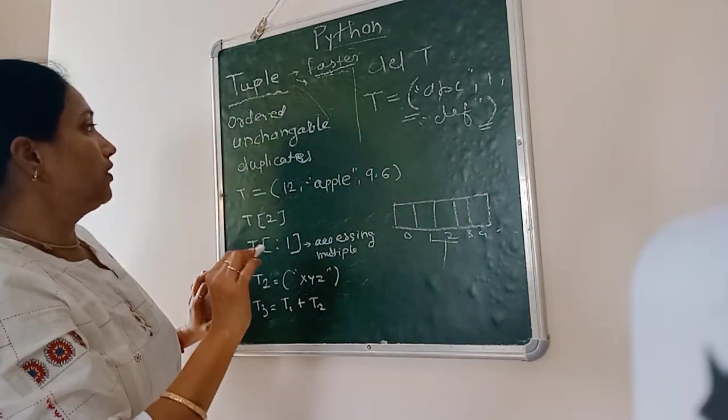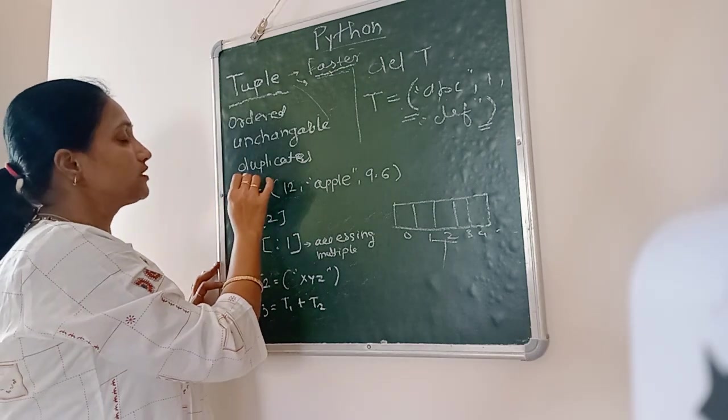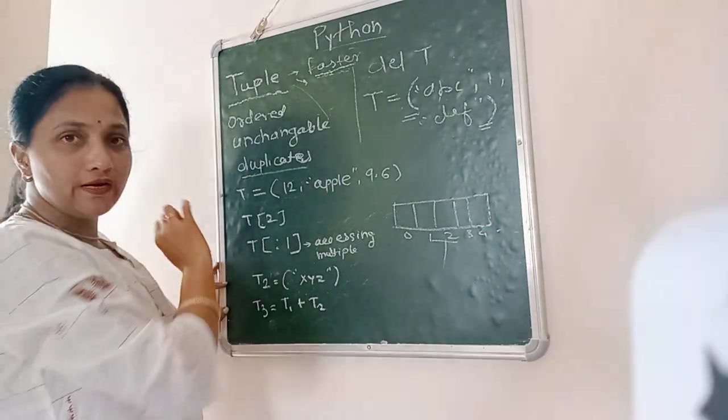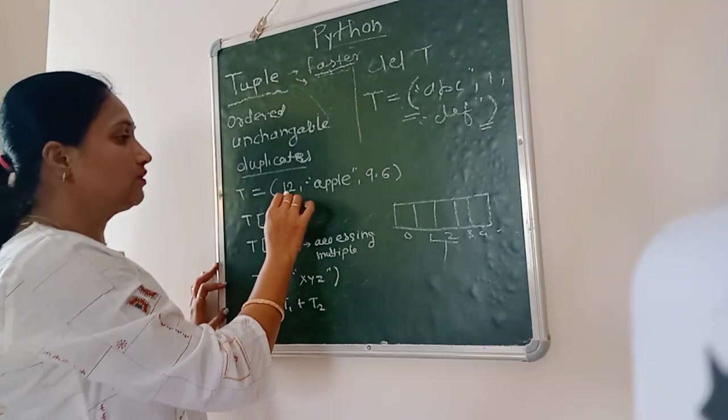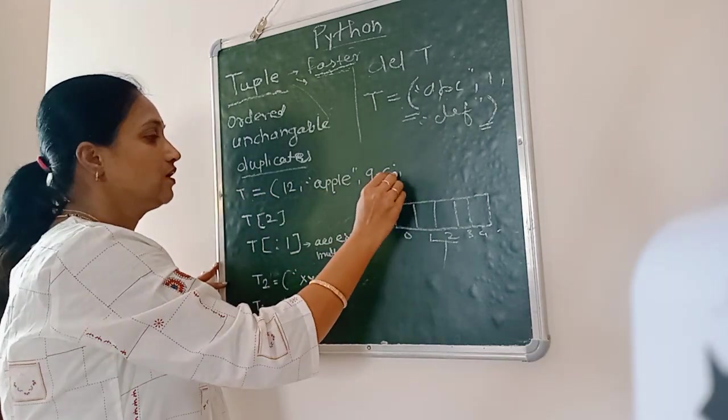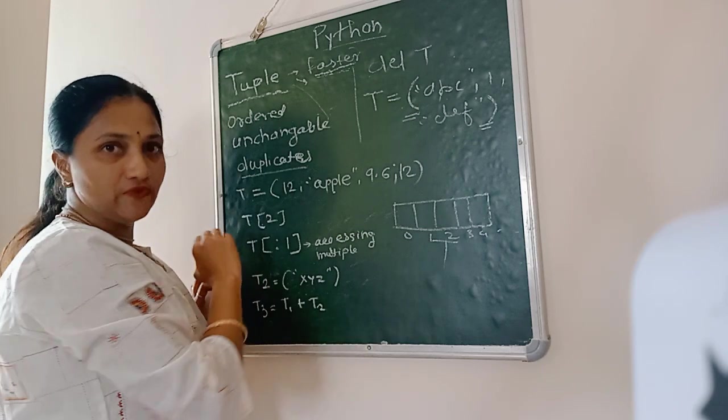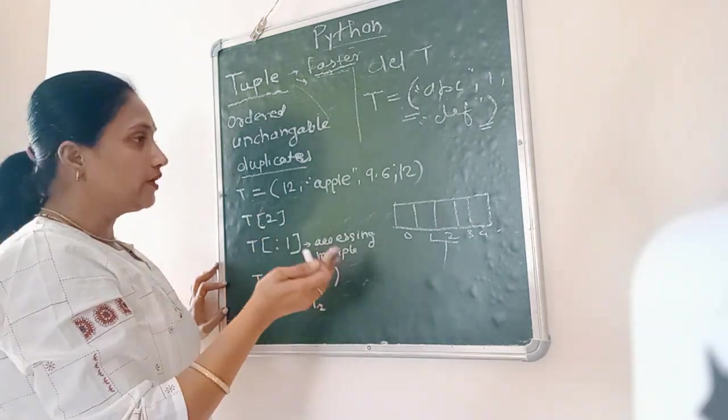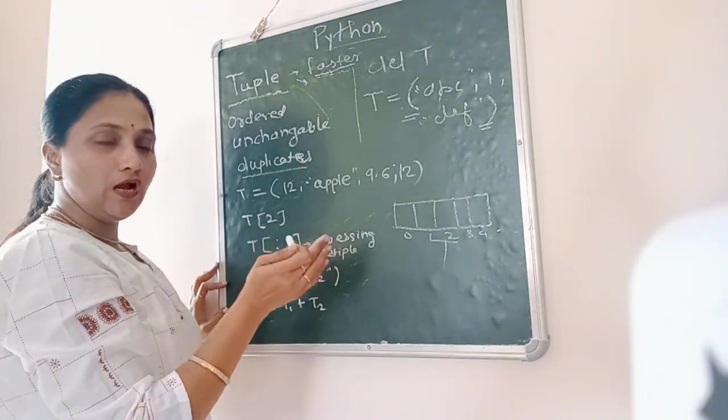Now the next one is duplicate elements are allowed in tuple. Suppose here I have taken tuple 12, apple, 9.6. I can take here again 12. So the tuple elements can have duplicates, duplicate values.